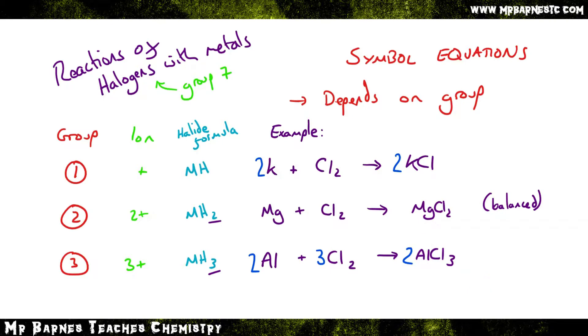So as long as you can remember this general formula, it doesn't matter what metal they give you, it's easy to work out. So for example, if I have a look at calcium, look on the periodic table, it's in group 2. So what I do is I just swap the Mg for Ca, which gives me the formula of Ca plus Cl2 goes to CaCl2, which is already balanced.